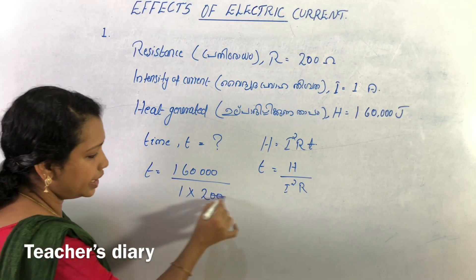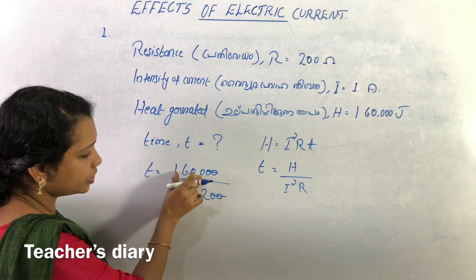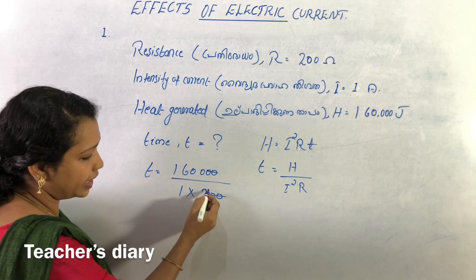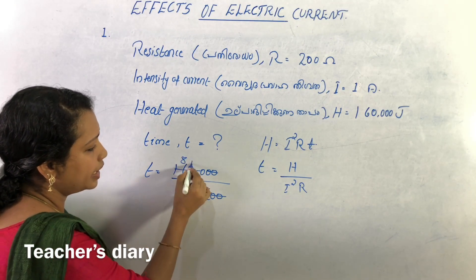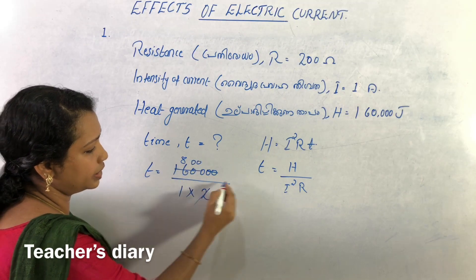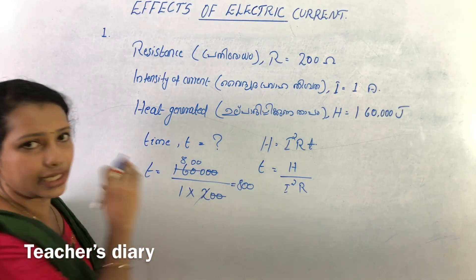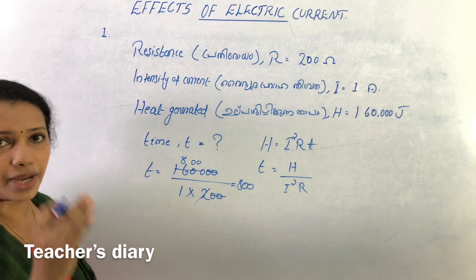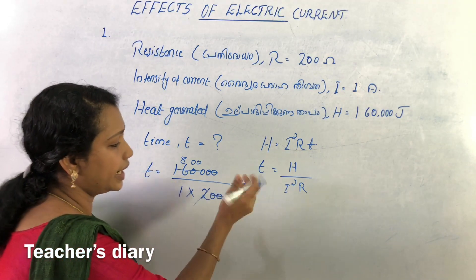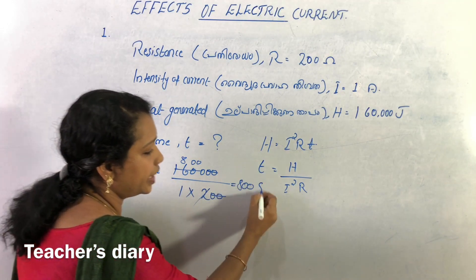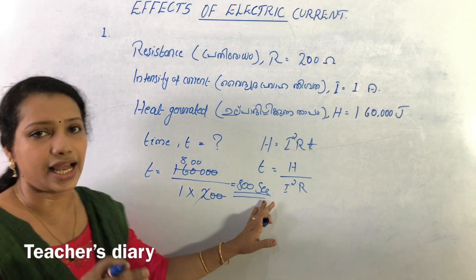We cancel the zeros and divide. The calculation gives us 800 seconds. So the time required to produce 1,60,000 joules of heat is 800 seconds.